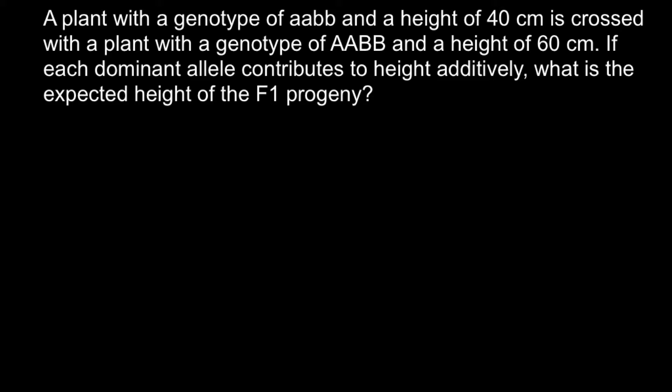So let me for the beginning write down both genotypes of two parents. The genotype of the first parent would be small a small a and small b small b, and this is going to be parent 1 that we have to cross with another parent whose genotype would be capital A capital A and capital B capital B. So this is going to be parent 2.